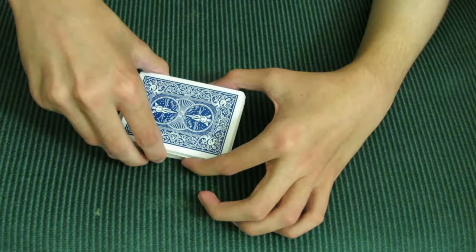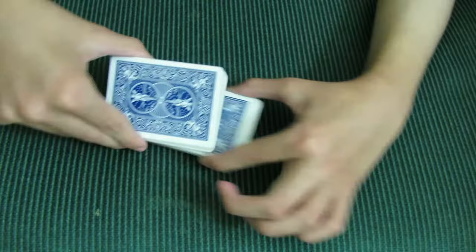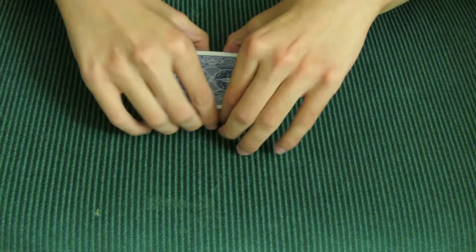And then you're going to have what was the top third of the deck, which is now at the bottom, and just bring that up, cut it to the top. And there's the ace.